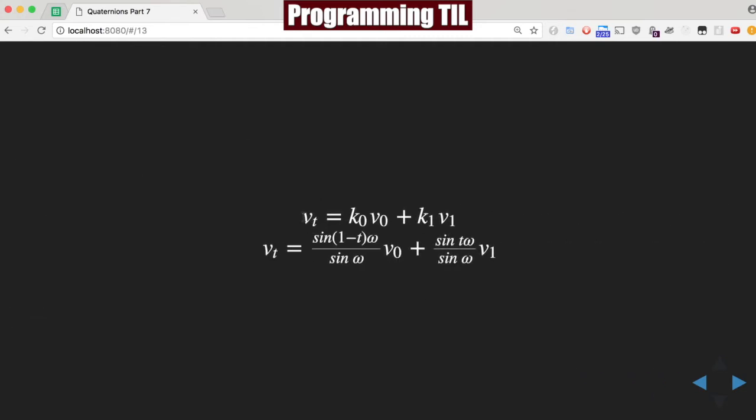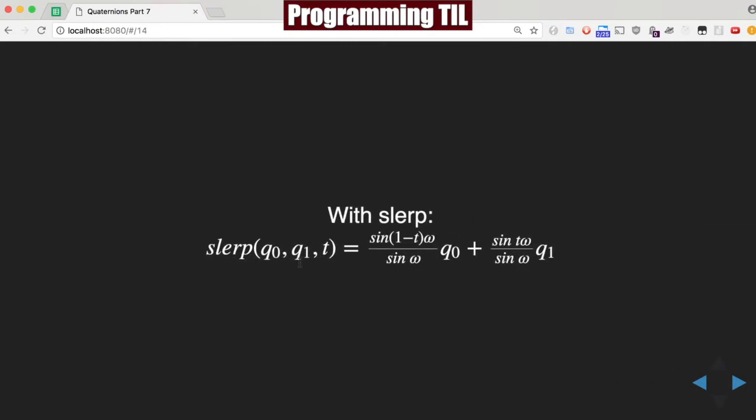So we can plug that back into our formula here for vt for each of the same. And then finally, we can go ahead and do that with the SLURP as well. And we'd end up with this formula here at the end. So this is our very simple SLURP formula.